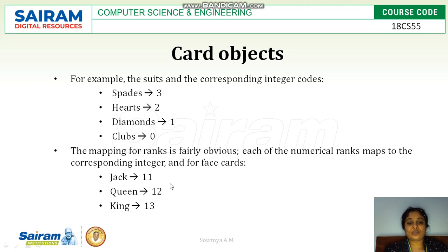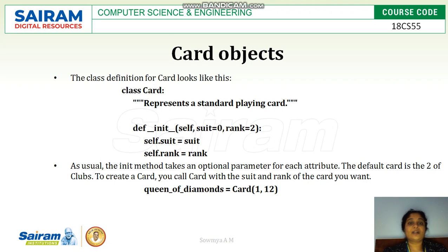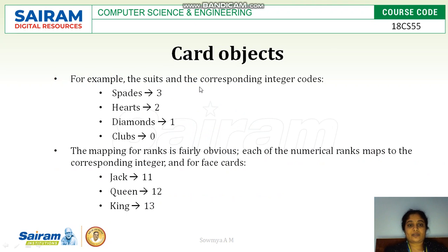If it is Hearts of Queen then (2, 12), or if it is Hearts of King then (2, 13). This is how we can map suits with cards for card objects. For creating class Card, we define an init method for initializing suit and rank. Suits have values from 0 to 3: 0 for Clubs, 1 for Diamond, 2 for Hearts, and 3 for Spades.